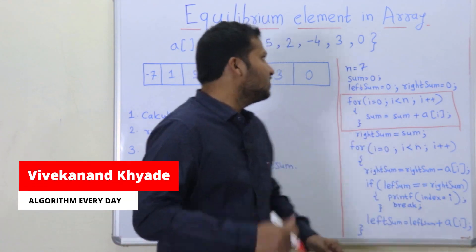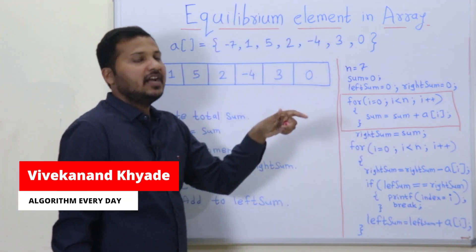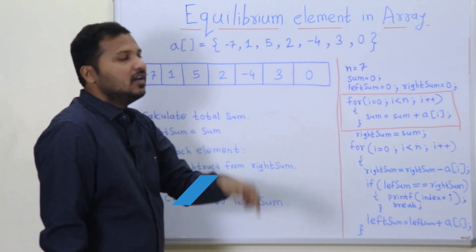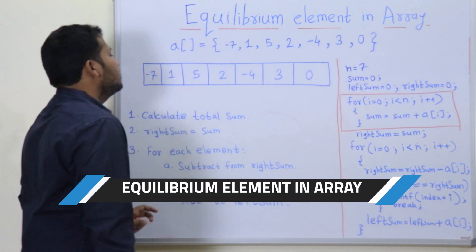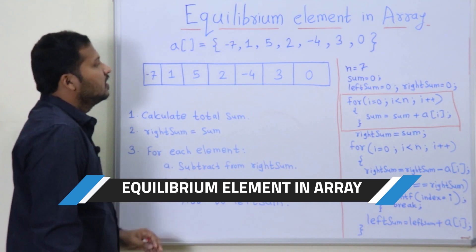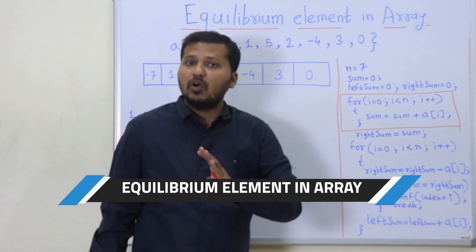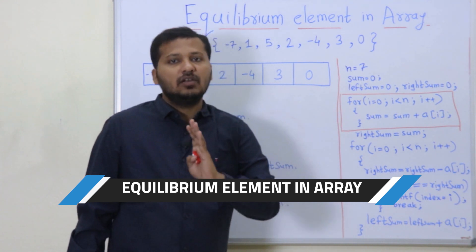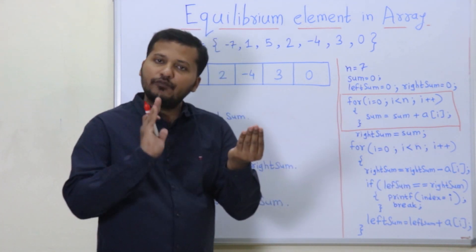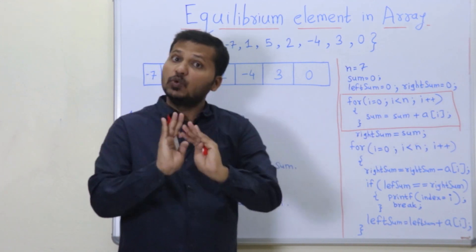Today we are going to see what is an equilibrium element in an array and how to find that equilibrium element. An element for which the sum of all the elements on its left side and sum of all the elements on its right side is equal.